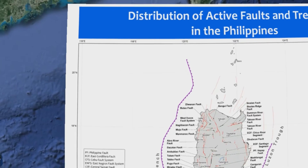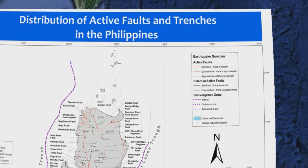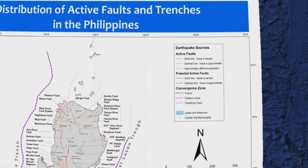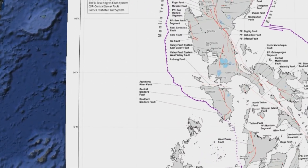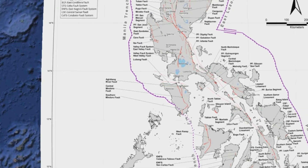Subduction zones are found where one plate overrides or subducts another, pushing it downward into the mantle where it melts. Subduction zones are characterized by deep ocean trenches, shallow to deep earthquakes, and mountain ranges containing active volcanoes. Most faulting along spreading zones is normal faults, along subduction zones is thrust or reverse faults, and along transform faults is strike-slip or lateral faults.